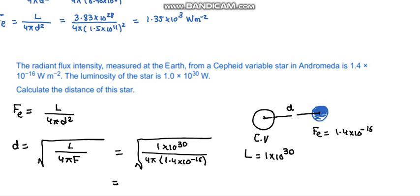Luminosity is 1×10³⁰, 4π, F the intensity is 1.4×10⁻¹⁶, and d². It was within square root so this becomes 2.38×10²¹ meters. If it asks you in light years you can write it as 2.4 million light years. So this is our answer.